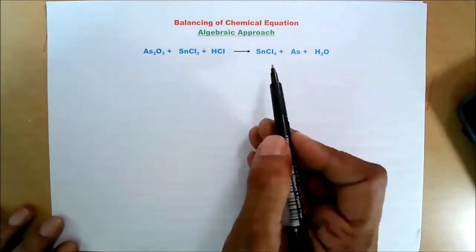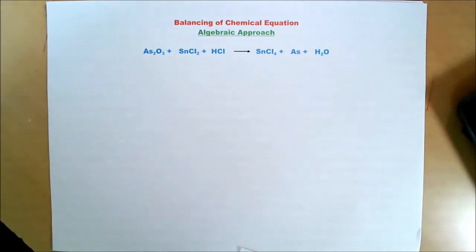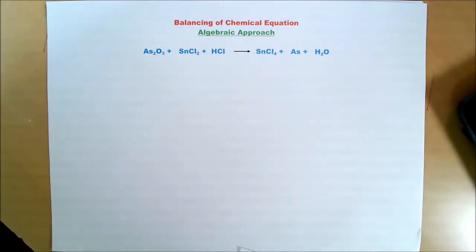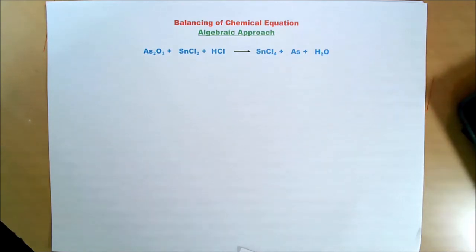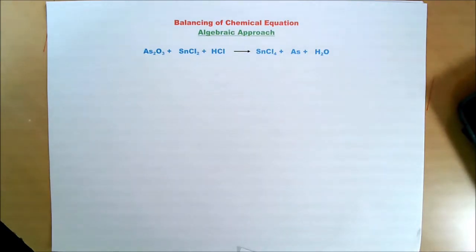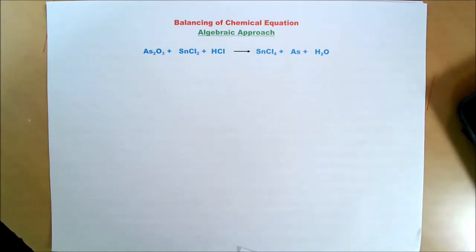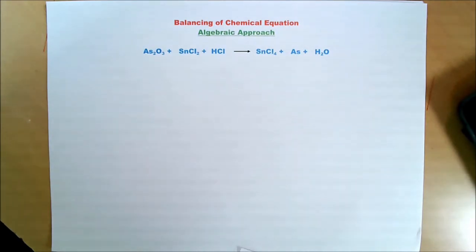Equations like this are quite cumbersome to balance by trial and error method. For equations having one or two reactants and products, trial and error method works well. However, as the number of reactants and products increase, or as the compounds become multi-atomic, the trial and error approach becomes quite frustrating and time consuming. Moreover, balancing of one element often leads to unbalancing of other elements.